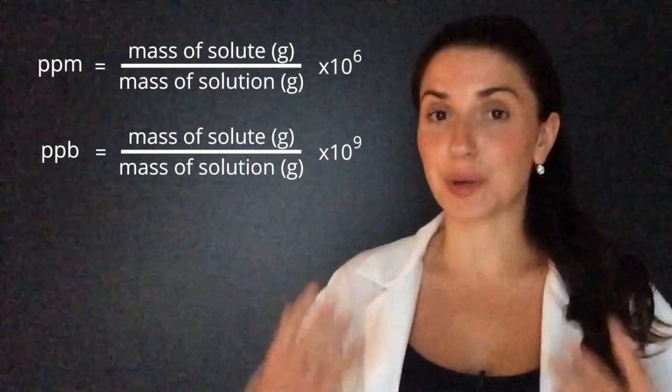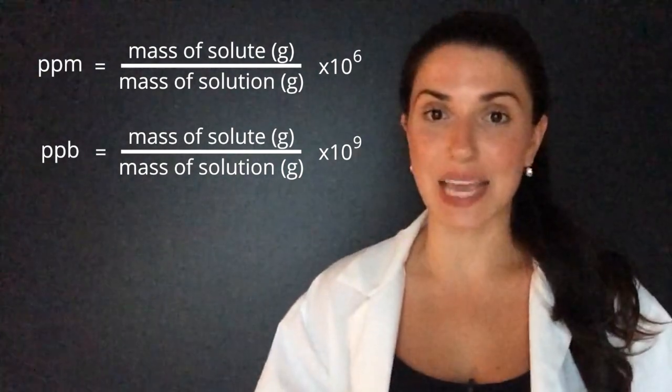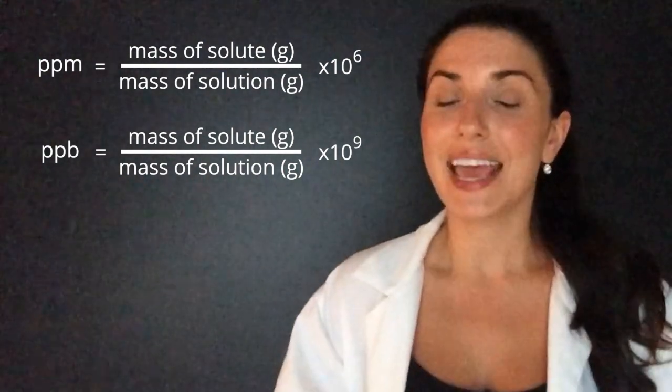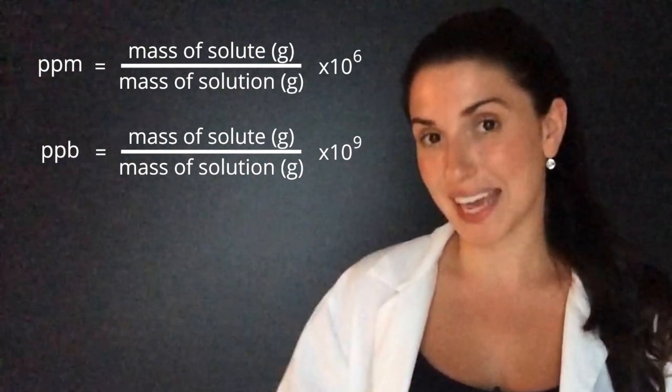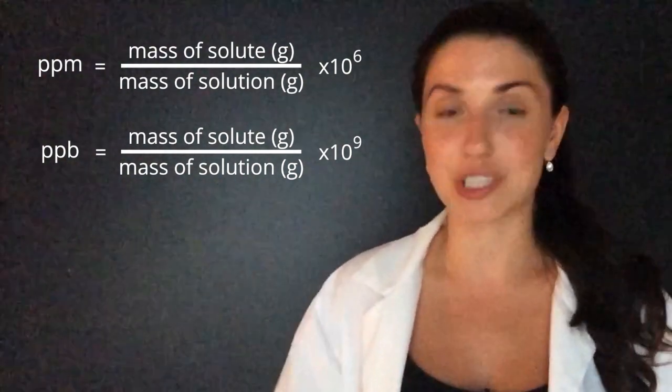The equation for parts per billion is the exact same except for one difference. Instead of multiplying by 10 to the power of 6, we multiply times 10 to the power of 9, which is 1 billion.